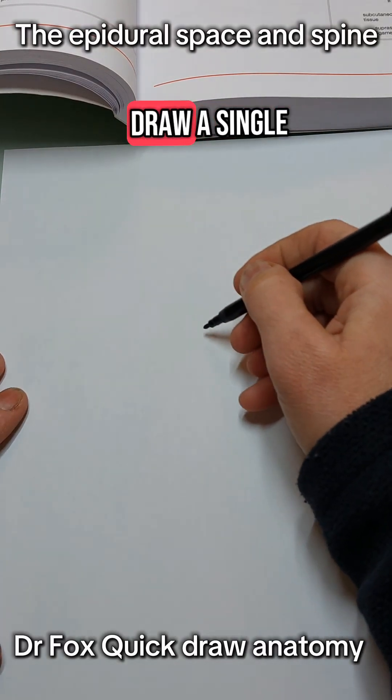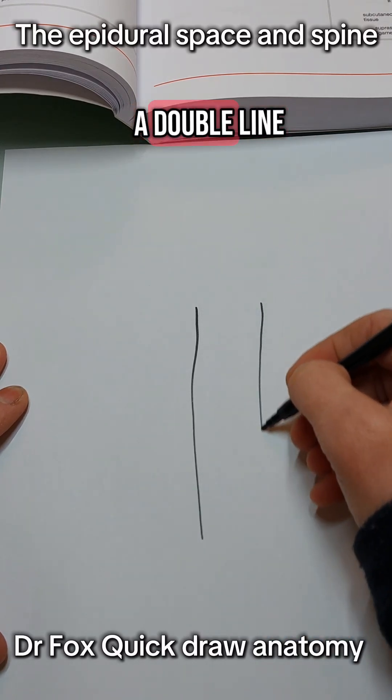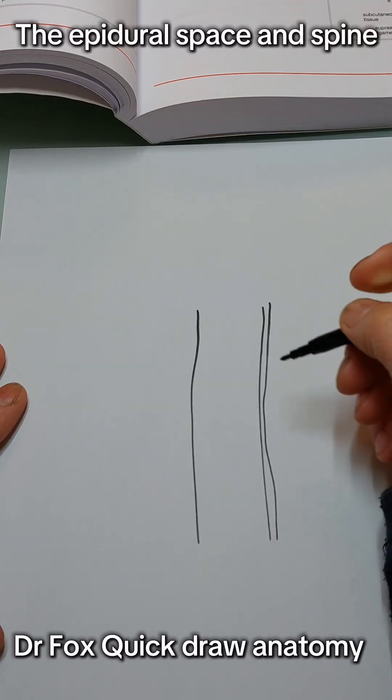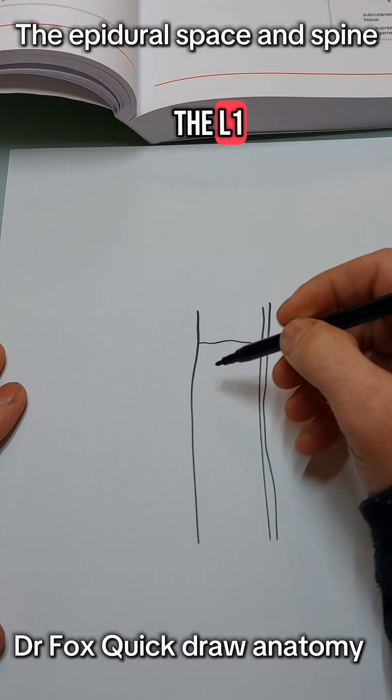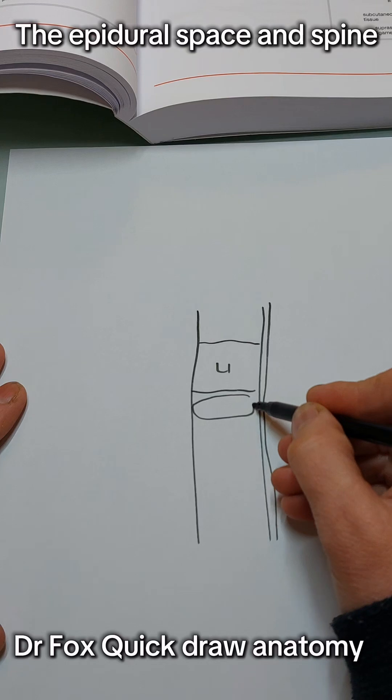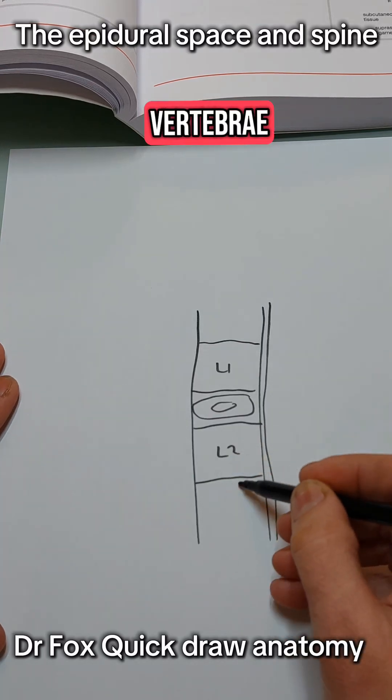Step one, draw a single line and then a double line, about two centimeters apart, and then draw the L1 and L2 vertebrae.